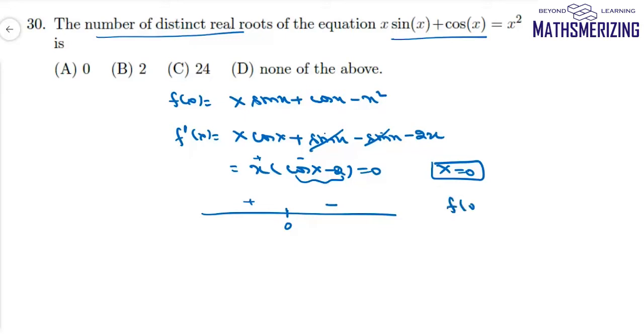At x = 0, f(0) = 1. The plus and minus signs indicate the function increases when x < 0 and decreases when x > 0.